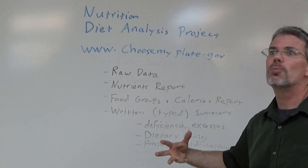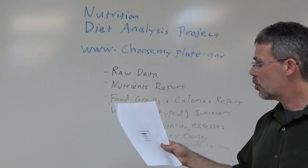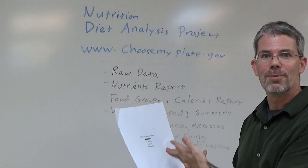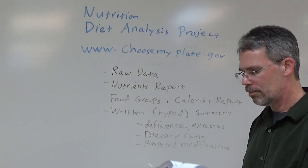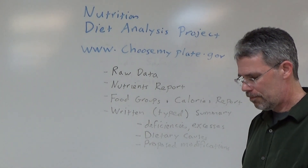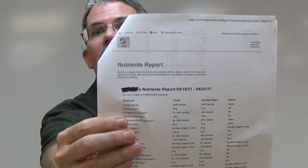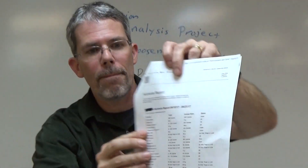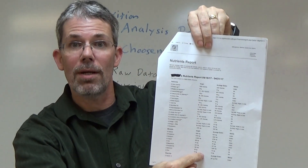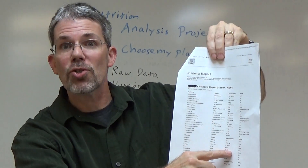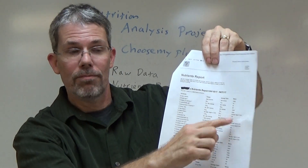You don't need other printouts besides those two. What I have in my hand is a completed diet analysis project from a previous semester. The person completed it, did everything right, and made a 100. The nutrients report will look something like this. At the top it'll say nutrients report, it'll list the nutrients, the target — that is what you should be getting — then what you're actually getting, and then a status of okay, over, or under.